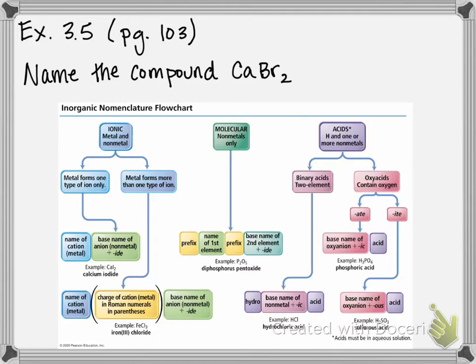So if you recall from example I believe 3.2, we practiced sorting different elements and compounds into their categories of either an atomic element, molecular element, ionic compound, or molecular compound. And so here is why we see that it's very important to be able to sort these things into their special categories. Because depending on if something is an ionic versus molecular compound, that changes how we name it.